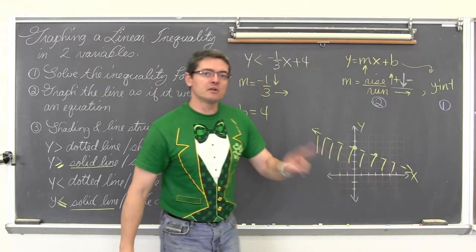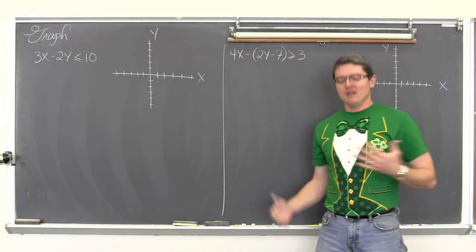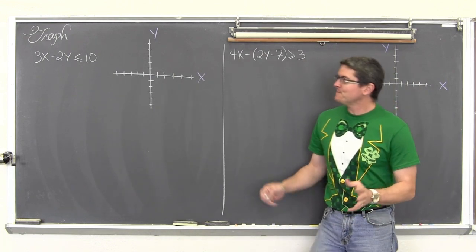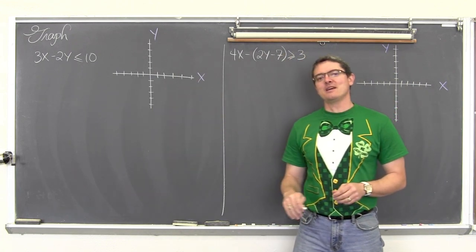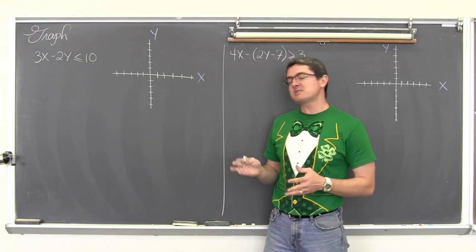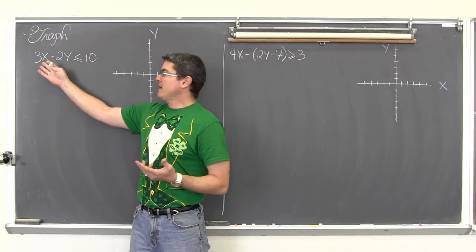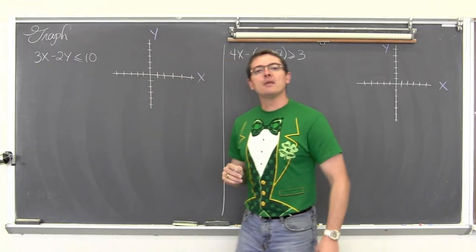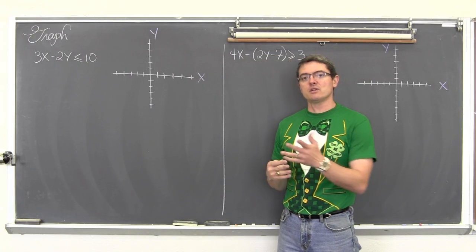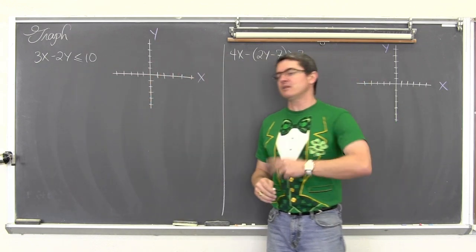Let's clear the board and do two more examples. We have three x minus two y is less than or equal to ten. This linear function is currently in standard form. You can graph it using x and y intercepts, but then you'd need a test point to determine where to shade. So instead, like the last example, we are going to put it into slope-intercept form and get y alone.